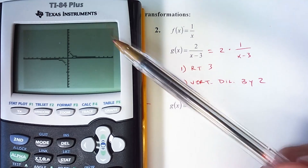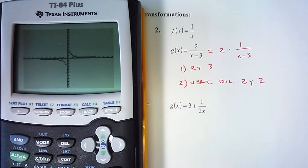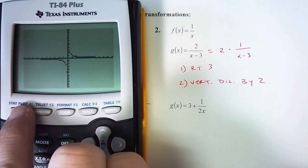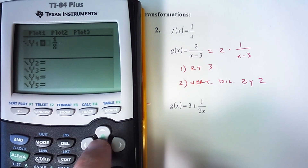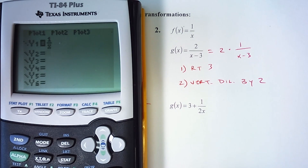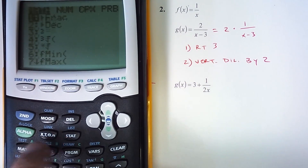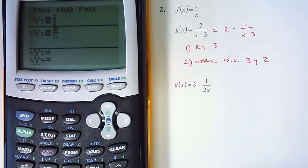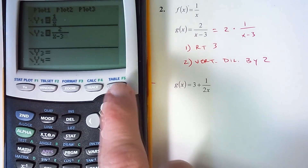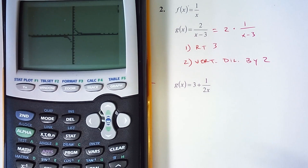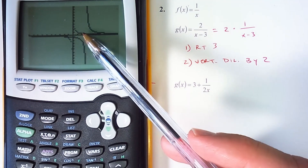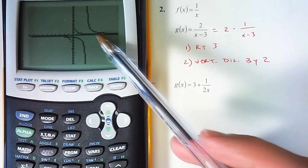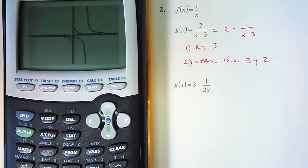When you look at the graph, it's going to be a little difficult to tell that it got two times taller — this type of graph doesn't show that very clearly. We'll go to y2 and enter the fraction 2/(x−3) and graph. It shifted 3 units to the right and is a little bit taller; it's kind of difficult to tell, but it is.